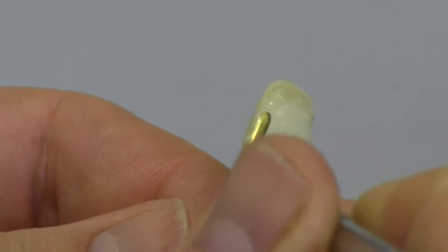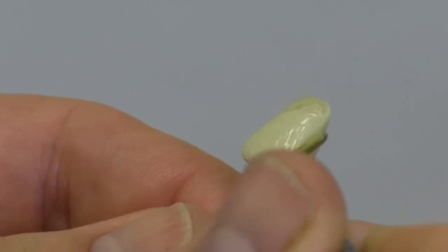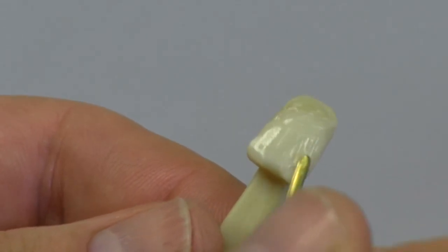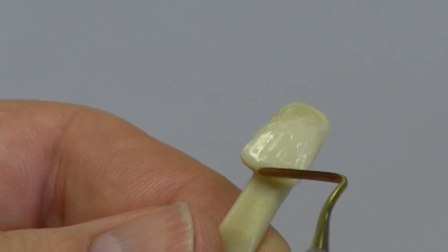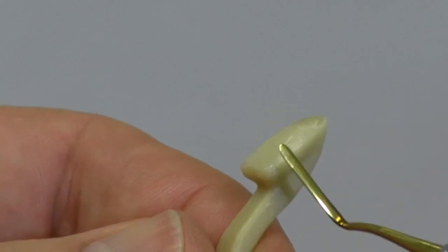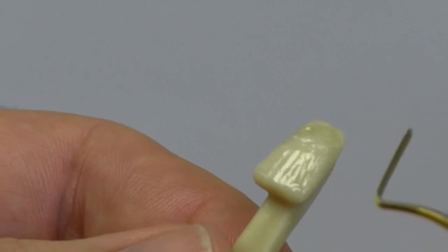And now for the specific tip of the month regarding avoiding incisal fractures on your composite restorations. As you are sculpting the composite and then contouring it, including adjusting the occlusion, it's very important to make sure that your incisal edge is at least one millimeter thick.